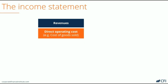Below revenues we have direct operating expenses, such as purchasing inventory. This line is often called cost of goods sold or cost of sales. This is the first expense line on the income statement. After deducting cost of goods sold from revenue, we arrive at our first subtotal on the income statement, referred to as gross profit.